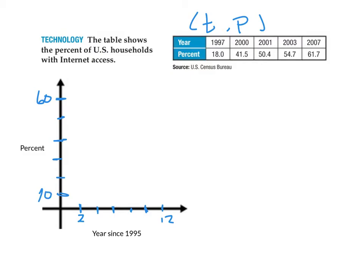Now we just need to plot all of our points. First of all, we have 1997 and 18. So that was year 2. And 18 would be just below the 20 mark. So something like here. There's 20%, so 18 would be just below that. In 2000, that would be year 5. So we have 2, 4, and 6. Year 5 is going to be halfway in between 4 and 6. And we need 41.5%. So here's 30, here's 40. 41.5 would be just above that.